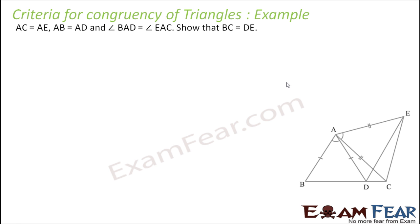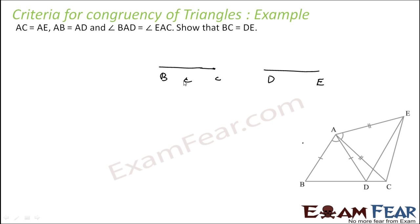Let's take a few more examples. It is given that AC is equal to AE, AB is equal to AD, and angle BAD equals angle EAC. We have to prove that BC and DE are equal. Let's draw first — BC is here, and we have to prove these two sides are equal, so we will try to prove two triangles are congruent.